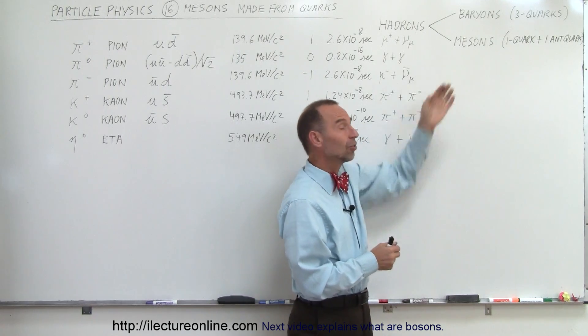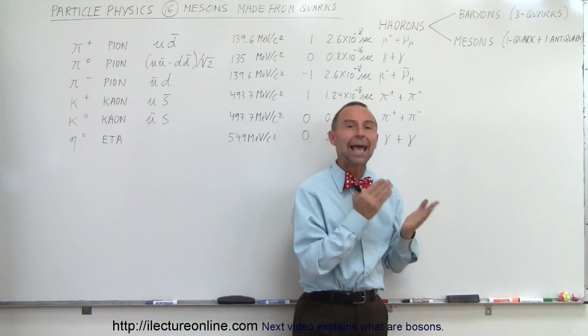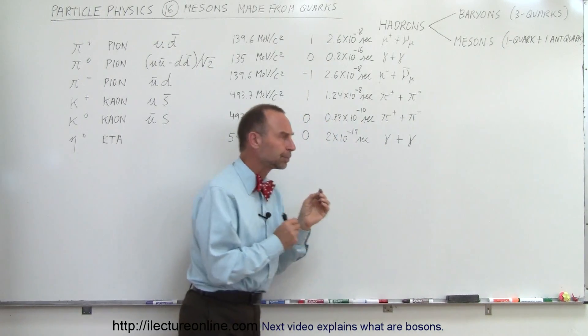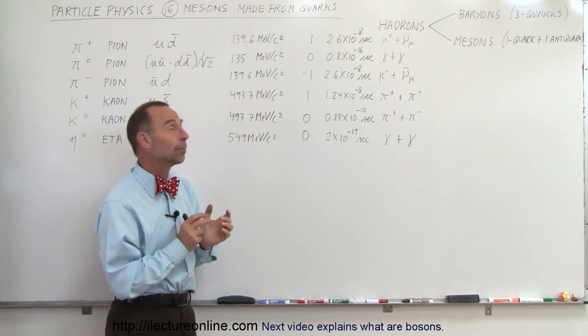And then we have the mesons, mesons for middle-sized, and those are made up of one quark and one antiquark. And what we find here is that they are also very unstable particles.